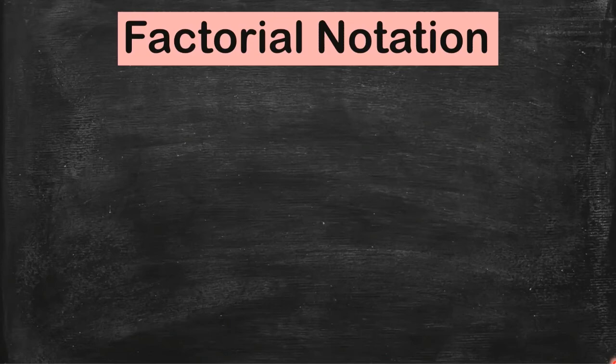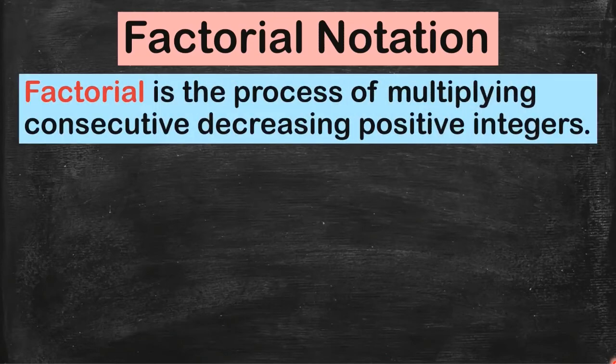What do we mean by factorial? It is the process of multiplying consecutive decreasing positive integers. Positive integers start with 1 - those are our counting numbers: 1, 2, 3, 4, 5, 6, and so on. Consecutive means magkakasunod, and decreasing means pababa.